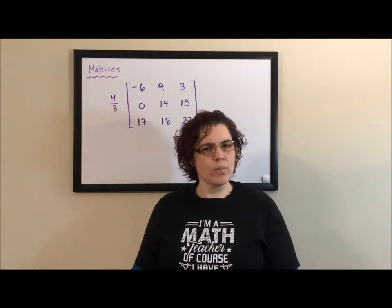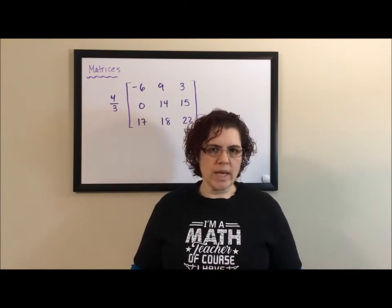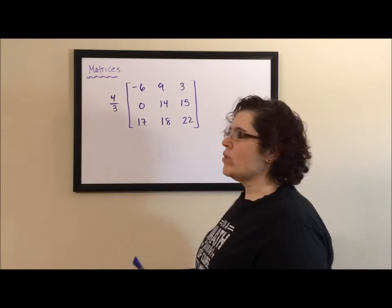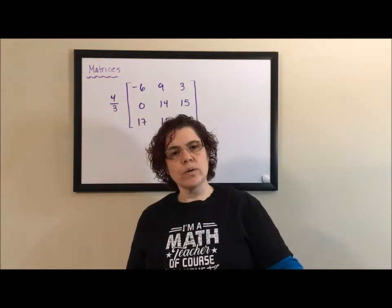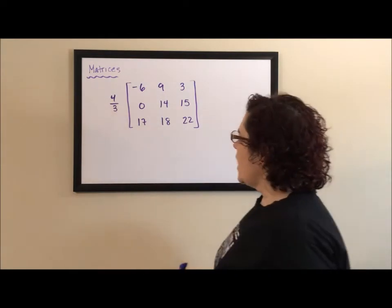A scalar means it's just a single number versus something more complicated. The number is four-thirds. I know you're thinking a fraction is complicated, but it is still just a single number even though it's a fraction.